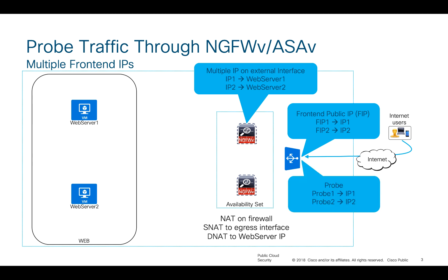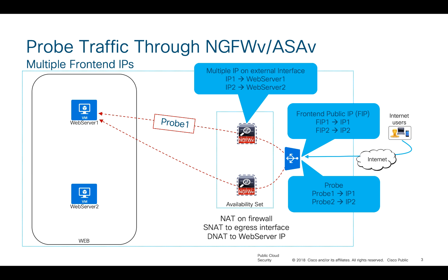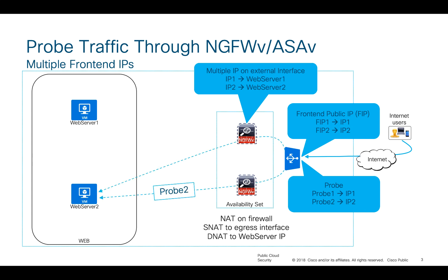Now let's look at the probe configuration. Probe 1 will probe IP 1, which goes towards web server 1. Probe 2 will probe IP address 2, which probes web server 2. Any traffic from the internet hitting front-end IP 1 will probe web server 1. This is a reliable probe because instead of probing the interfaces of the firewall, I'm probing my application server directly. So I have defined two probes: probe 1 for web server 1 and probe 2 for web server 2.